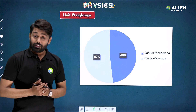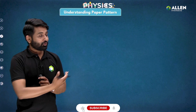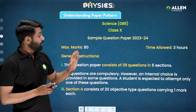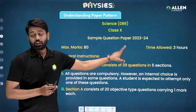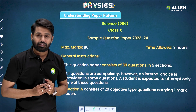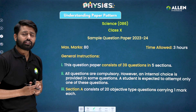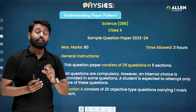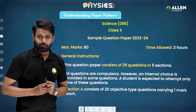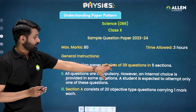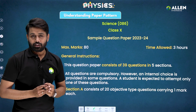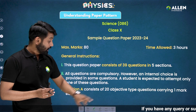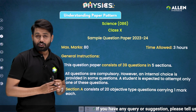Now let's understand the paper pattern. This is from the CBSE Sample Question Paper 2023-24. On the first page of your paper you will see general instructions — read all of them carefully. There are 39 questions and all questions are compulsory. There are five sections. Section A consists of 20 objective type questions carrying one mark each.